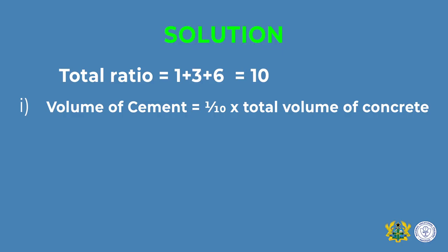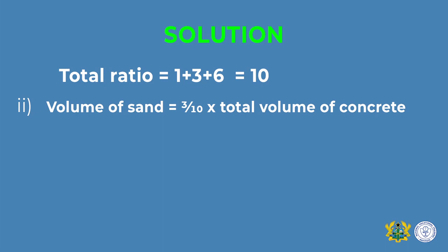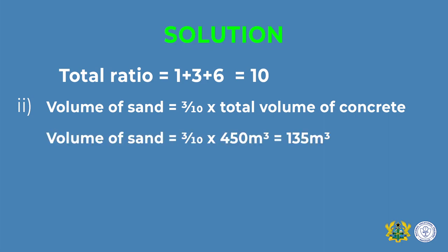Start by finding the volume of cement. The ratio for cement is 1, so divide 1 by the total ratio of 10 and multiply by the total volume of concrete produced. Using your calculator, you get 45 cubic meters. From there, find the volume of sand: since the ratio for sand is 3, divide 3 by 10 — the total ratio — and multiply by 450, giving an answer of 135 cubic meters.